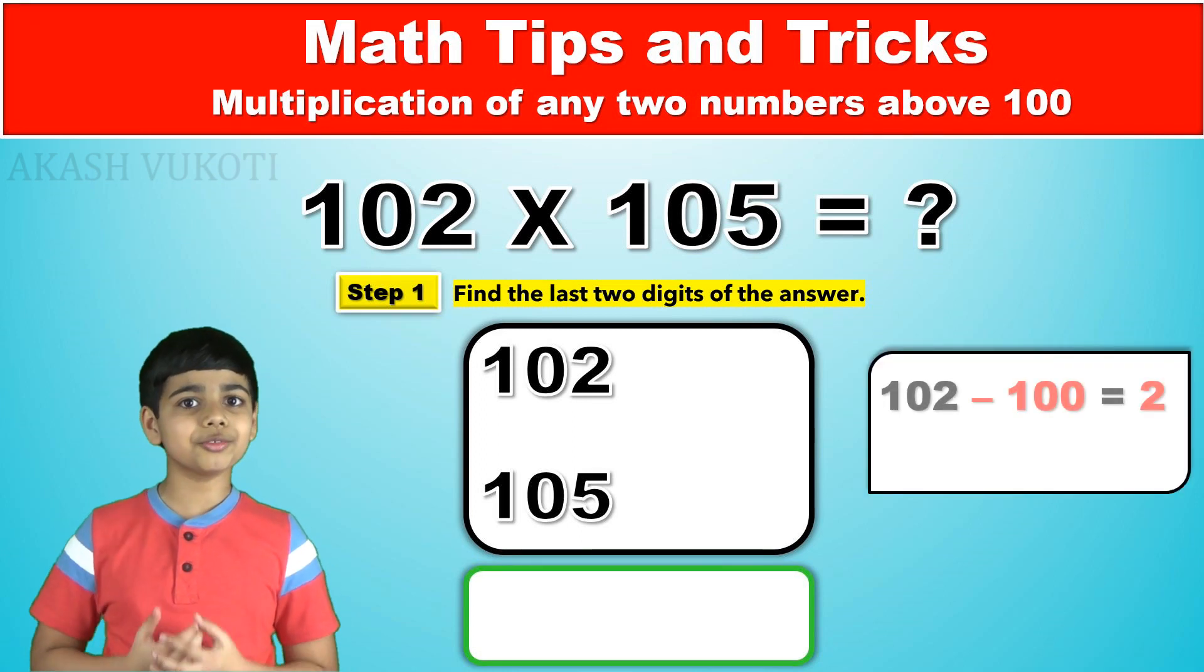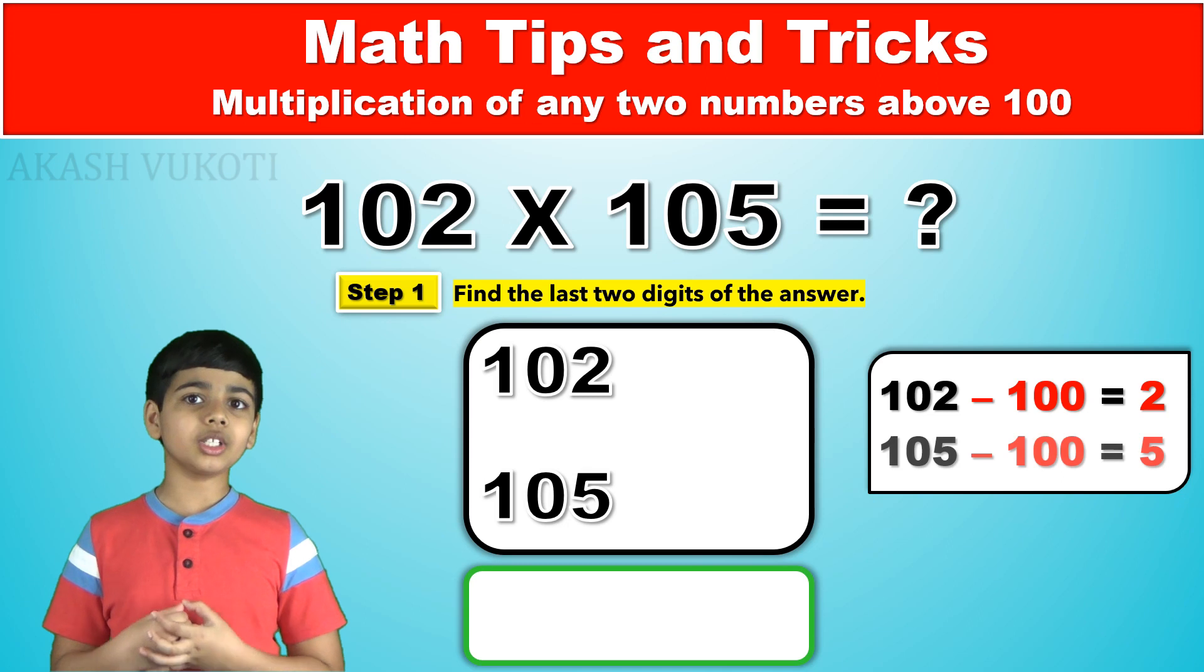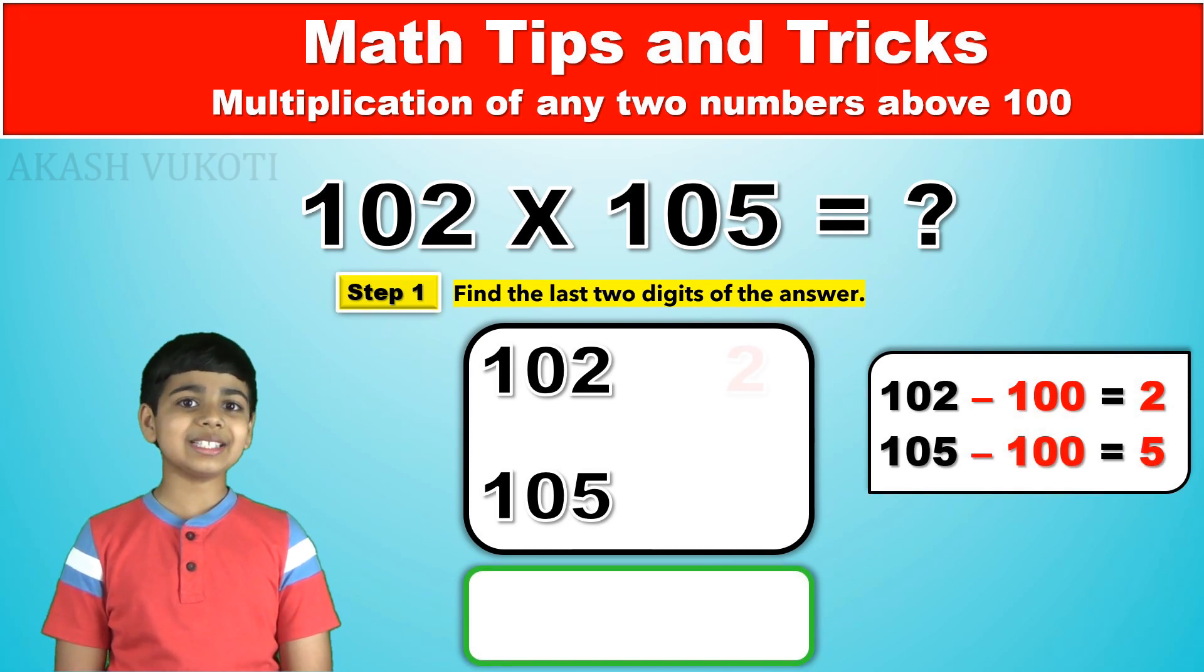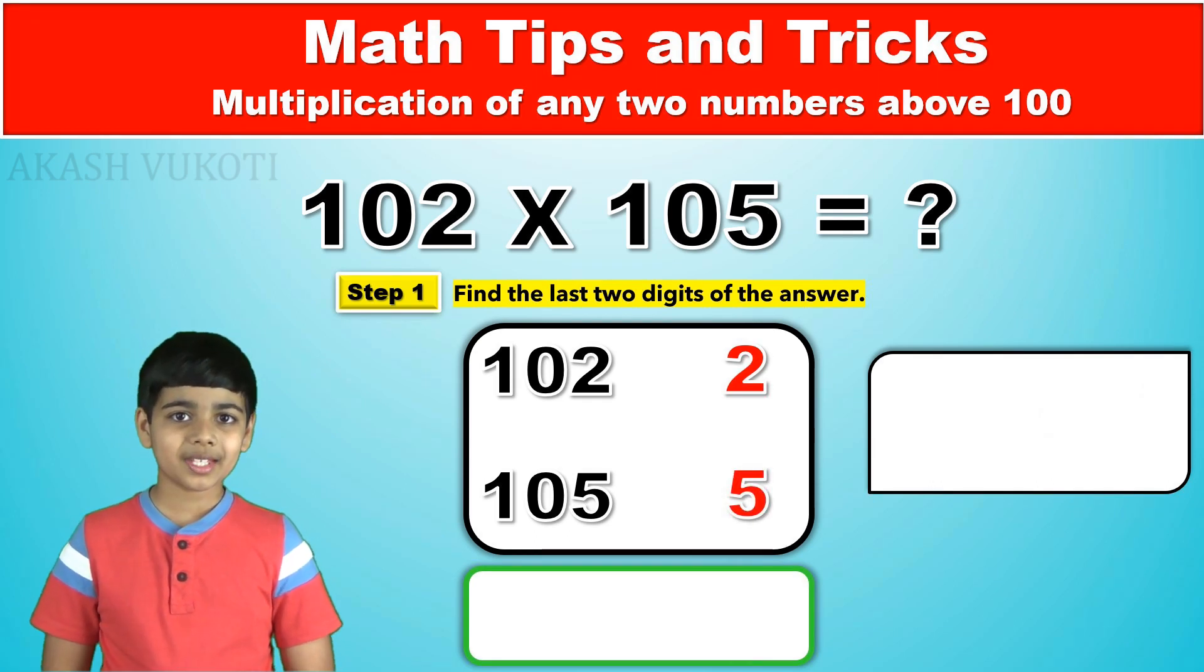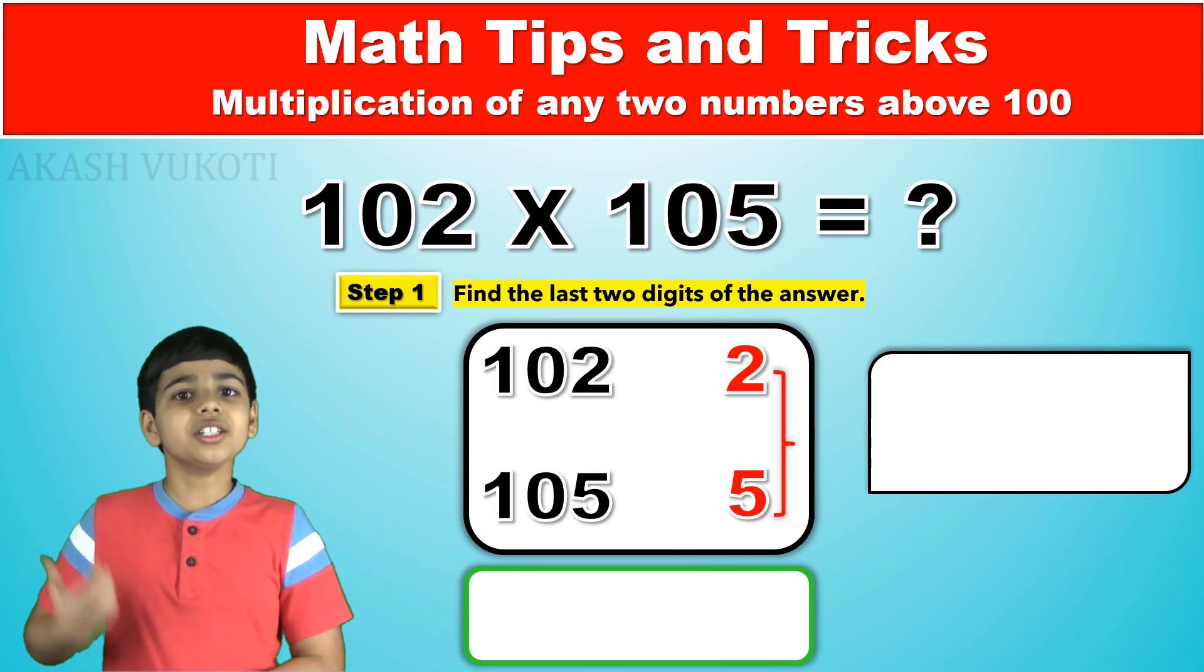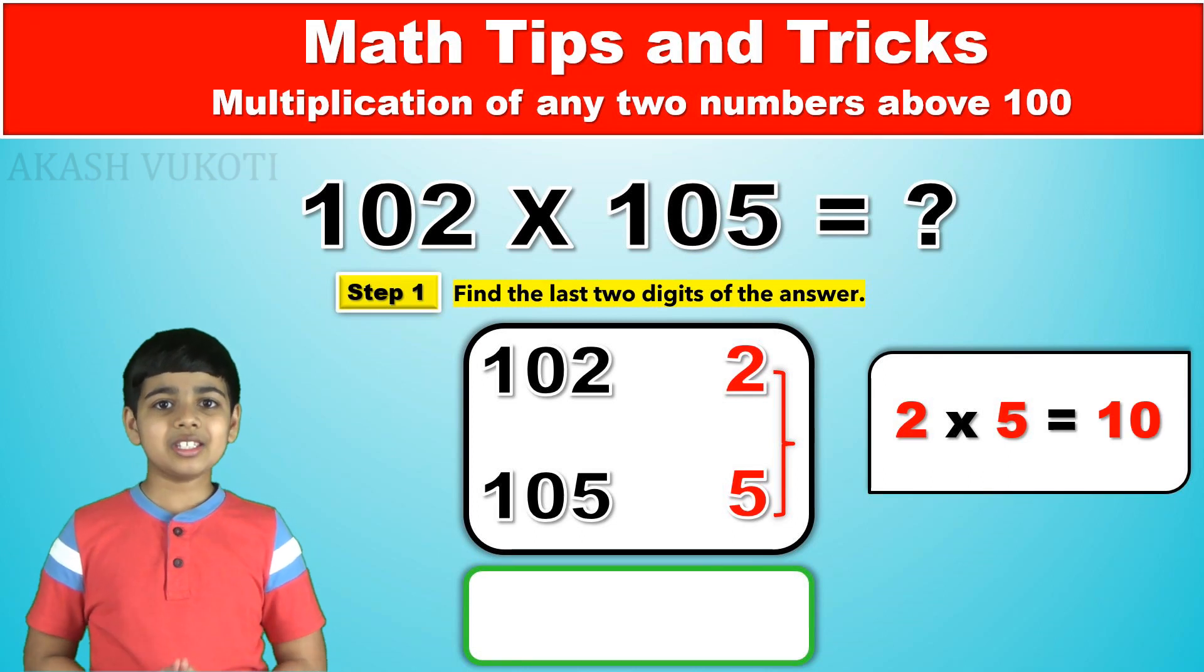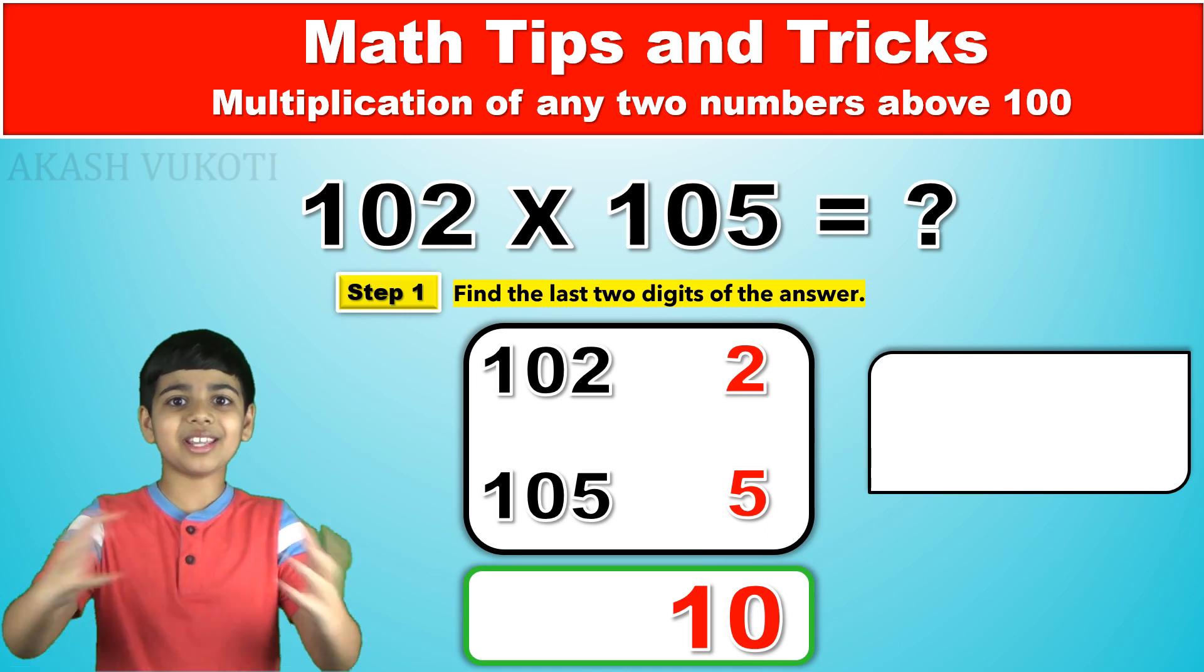In this case, that would be 102 minus 100, which is 2, and 105 minus 100, which is 5. Make sure to write these differences down too. It'll come in handy later. We take these two numbers and then we multiply them together, which would be 2 times 5. That is 10. This number is the last two digits of our answer.